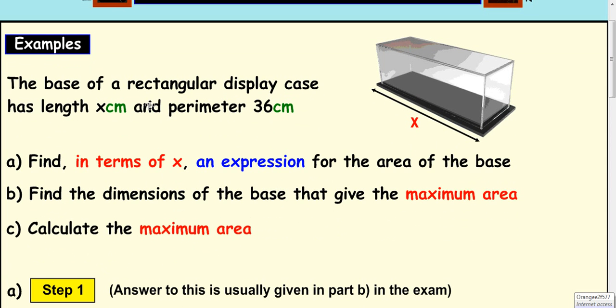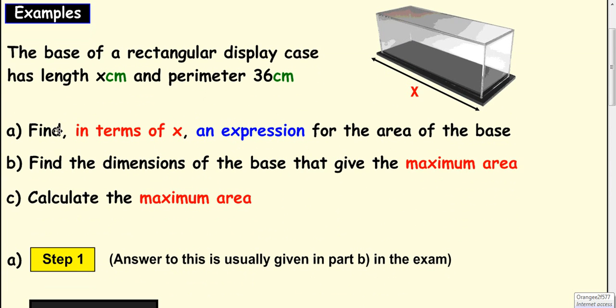The base of a rectangular display case has length x centimeters and perimeter 36 centimeters. Part A says find in terms of x an expression for the area of the base. This is usually the hardest part of this question and it's often given. We usually have to prove it. But it's good to try and practice it to try and get the three marks available for this part of the equation.